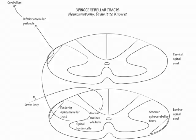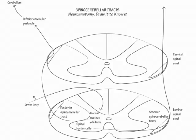Unlike the posterior spinocerebellar tract, which remains uncrossed throughout its course, the anterior spinocerebellar tract crosses within the spinal cord and then again back within the cerebellum to maintain an ipsilateral relationship with the periphery. Show the fibers of the anterior spinocerebellar tract cross within the ventral commissure of the spinal cord and travel up to the superior cerebellar peduncle where they pass back within the cerebellum to their side of origin.